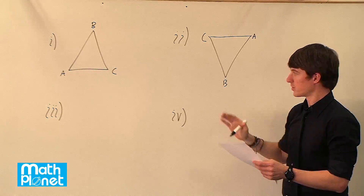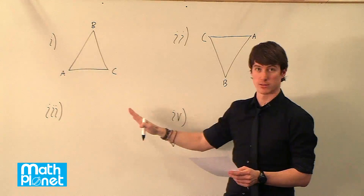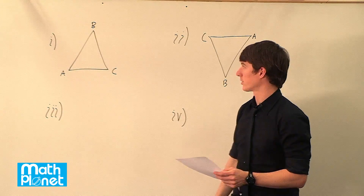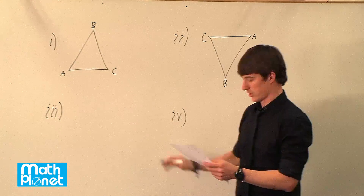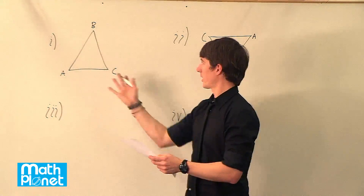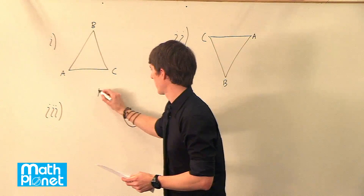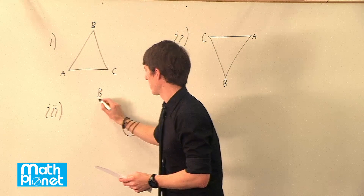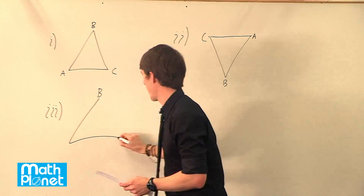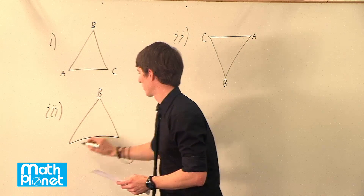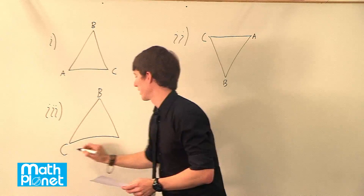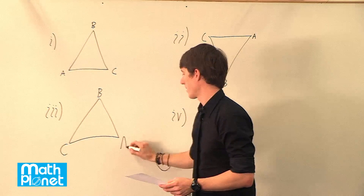If I want to do a reflection of this triangle, I can just flip it like so. So B will stay in the same place, but now A and C will switch. So this is C, and this is A.